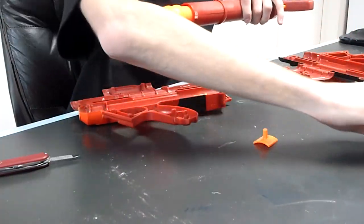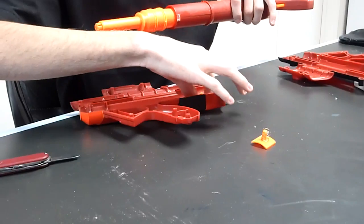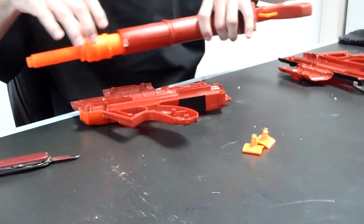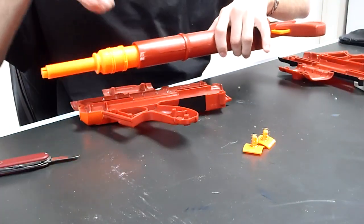There's one here and then there's another one on the other side right here. You want to make sure you don't lose either those or the spring because they're vital to the mechanism that cocks it.